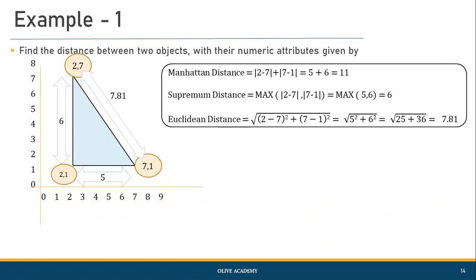Let's take a toy example. Given two points, find the Manhattan, supremum, and Euclidean distances. Manhattan distance: |2−7| + |7−1| = 5 + 6 = 11. Supremum distance: max(5, 6) = 6. Euclidean distance: √[(2−7)² + (7−1)²] = √(25 + 36) = √61 ≈ 7.81.